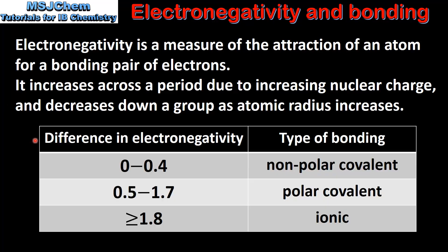By looking at the difference in electronegativity between two atoms we can deduce the type of bonding that will take place between them. If the difference is between 0 and 0.4 units we'll have a non-polar covalent bond. If the difference is between 0.5 and 1.7 units we'll have a polar covalent bond. And if the difference is 1.8 units or greater we'll have an ionic bond.